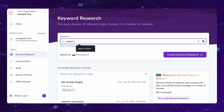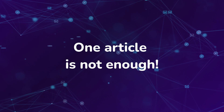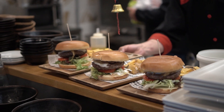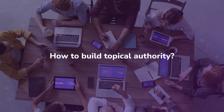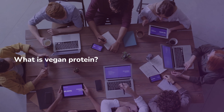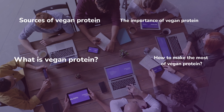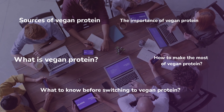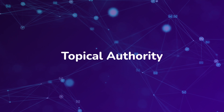Let's say you want to rank articles around the topic of vegan protein. Writing just one article targeting vegan protein is not enough to compete in this niche because it's huge and extremely general. You couldn't possibly cover all there is to know about vegan protein in one article. In order to build topical authority, you need to cover this topic from a 360 degree angle — what is vegan protein, sources of vegan protein, the importance of vegan protein, how to make the most of vegan protein, what to know before switching to vegan protein. These are all examples of the types of articles that would signal to Google that you're an expert in vegan protein — aka topical authority.